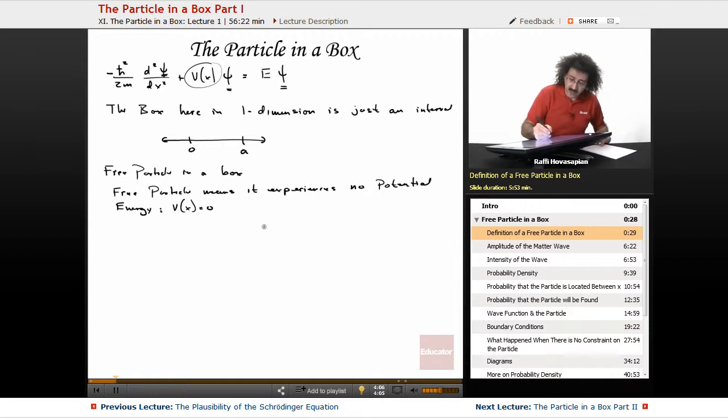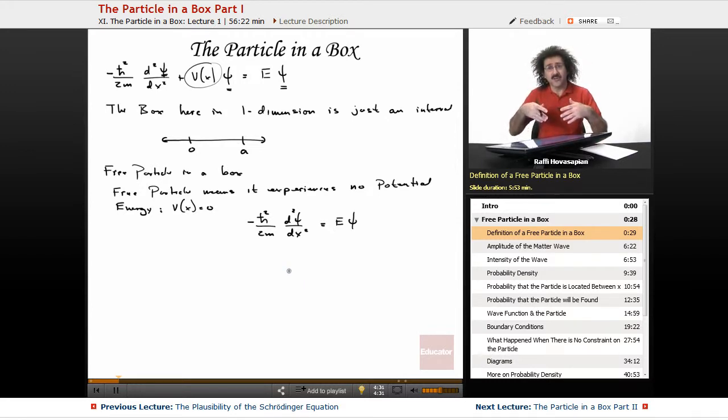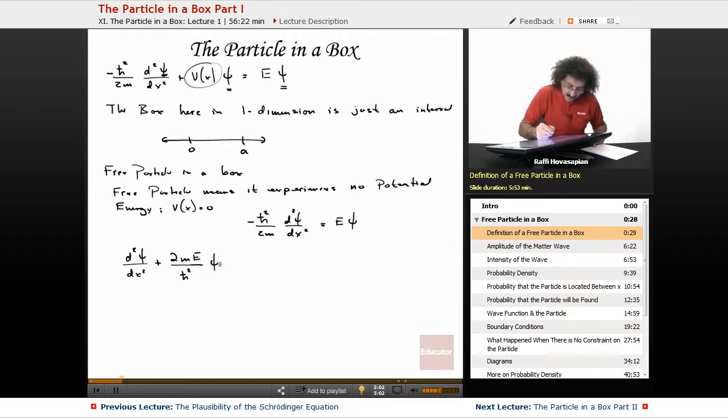This equation actually ends up becoming minus h-bar squared over 2m, the second derivative of psi, equals E times our wave function psi. I'm going to rearrange this and write it in a way that is more convenient for actually solving the differential equation. It's the way that you learn when you take a differential equation course. So we multiply by the 2m, divide by that, bring everything over to one side, and set everything equal to zero. It's going to be d squared psi dx squared plus 2mE over h-bar squared times psi equals zero.